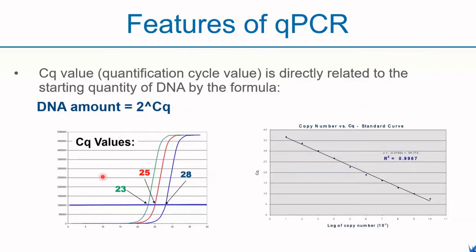The CQ value, or the quantification cycle value, is the QPCR cycle number at which your sample reaction curve intersects with the threshold line — the point where you start to see a steady doubling. QPCR value is directly related to the starting quantity of DNA, by way of the formula: DNA quantity equals 2 to the power of CQ value. Under the perfect situation, when you plot the standard curve where the log of copy number is the x-axis and the CQ values are the y-axis, you will get a linear curve with the R-squared value reaching 1.